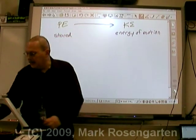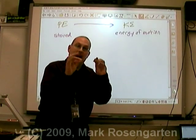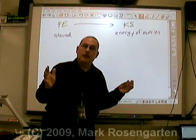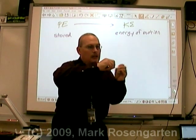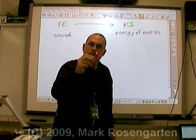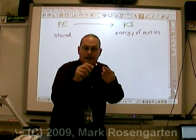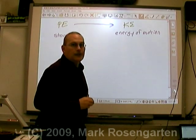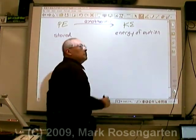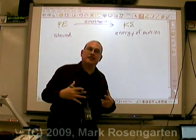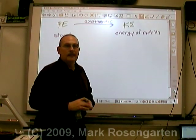For example, energy is stored in the chemical bonds of the elements found in a match — that's potential energy. All it takes is a little activation energy to get the reaction started, and the potential energy stored in those chemical bonds is released as kinetic energy. This kind of reaction is called exothermic, meaning it releases heat.